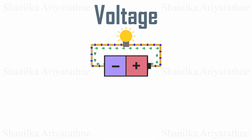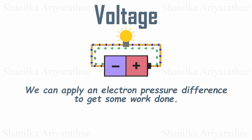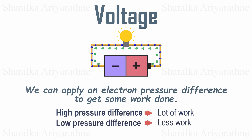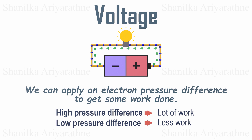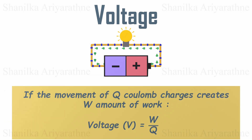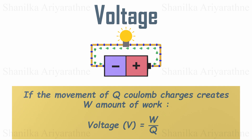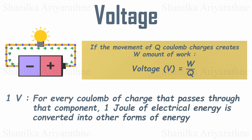How do we define voltage? We can apply an electron pressure difference and let electrons move to a low-pressure area, making them do some work along the way. The amount of work that electron movement can produce is a measurement of its potential difference. If the movement of Q coulombs of charge creates W amount of work, we define the voltage as V equals W over Q. In simple terms, this tells us how much work is done by one coulomb of charge as it moves through the circuit. When a component has one volt across it, each coulomb of charge passing through it converts one joule of electrical energy.